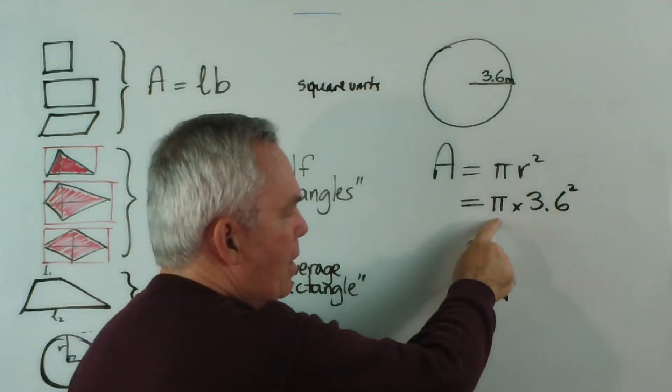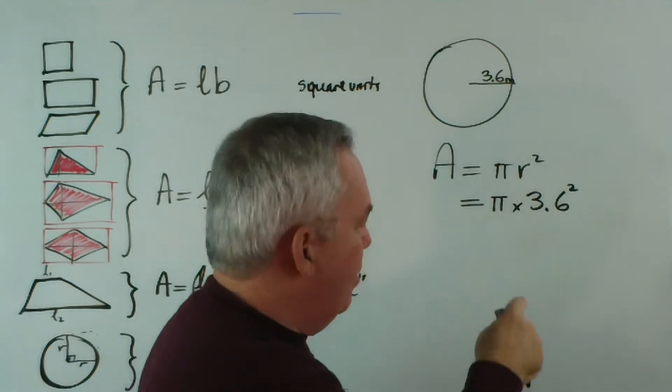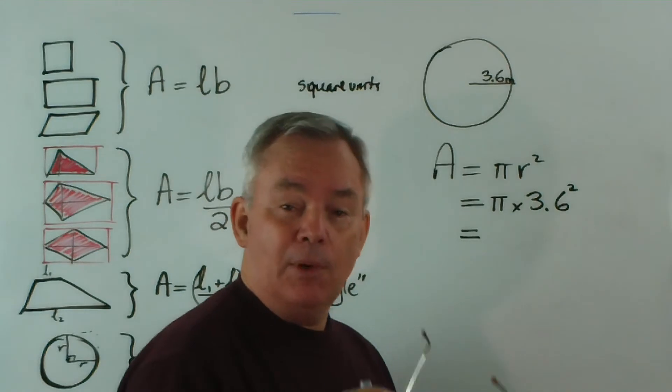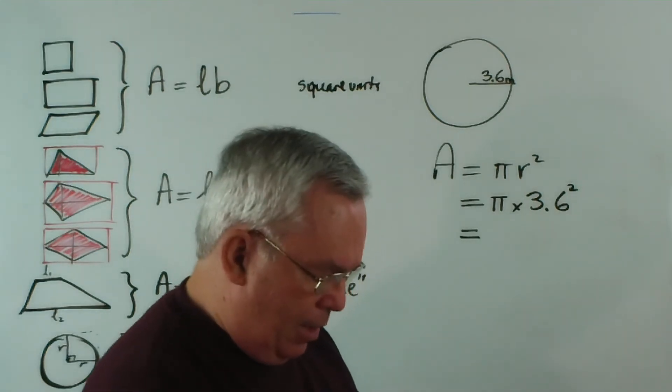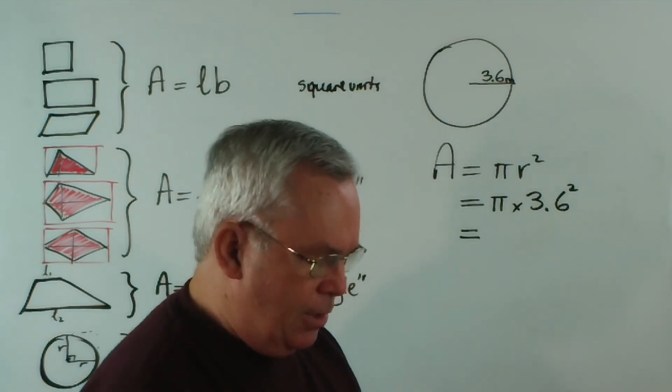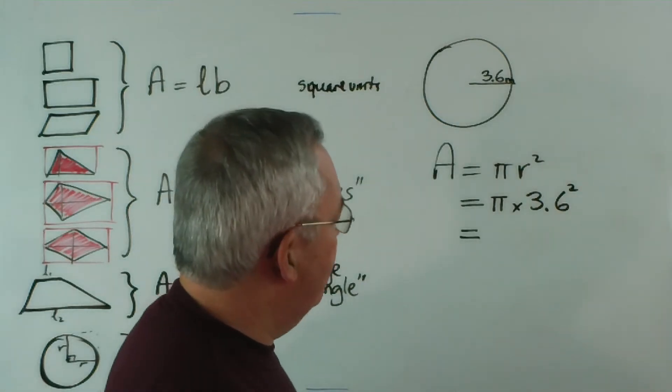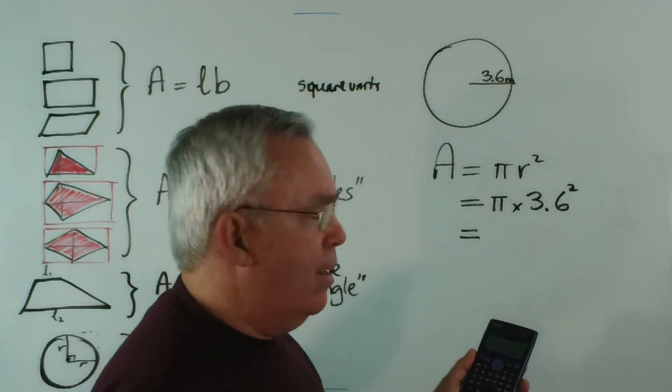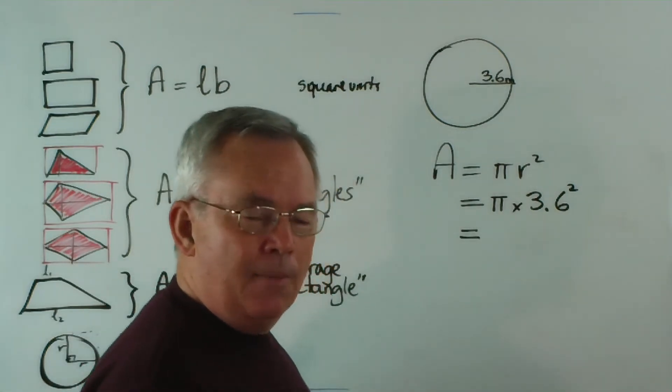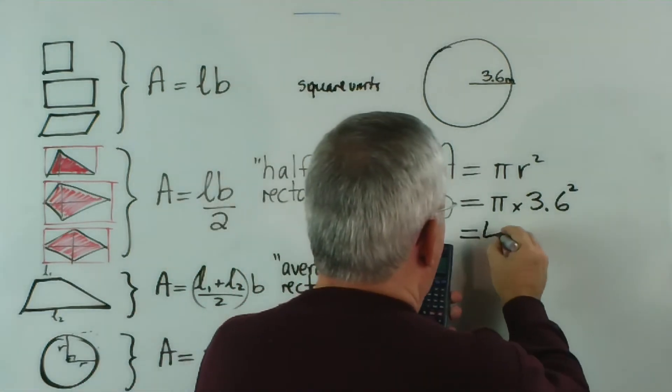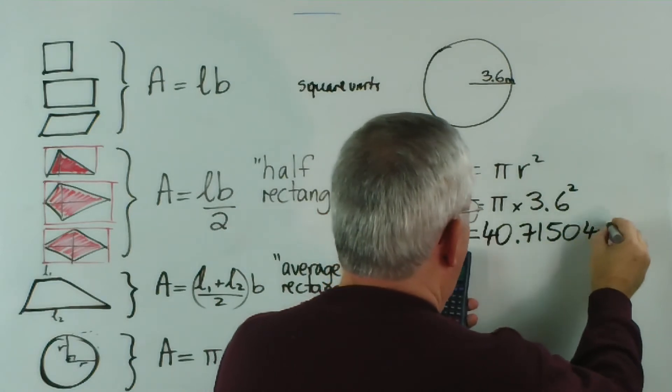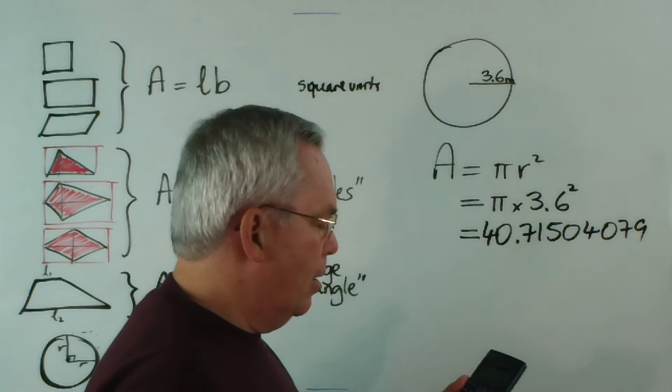Now, because this is a difficult number, it's not equal to exactly 3, it's 3 point something or other, we're going to use our calculator. Now, you'll excuse me if I wear my glasses. I type in pi times 3.6 squared equals. And this is the point I want to make with you. I want you to get in the habit of copying the calculator screen. Now, it takes just a few seconds, but I'll explain why. Let's write it first. I get 40.71504079 on my calculator.